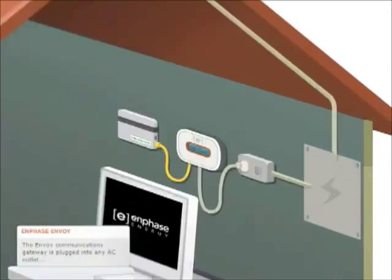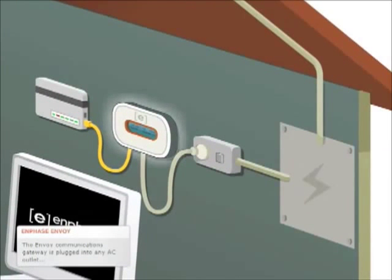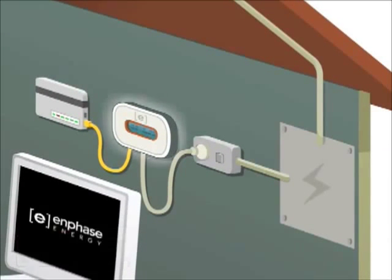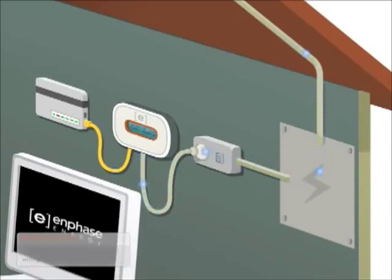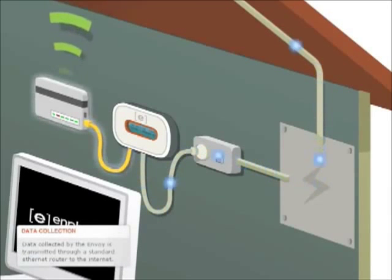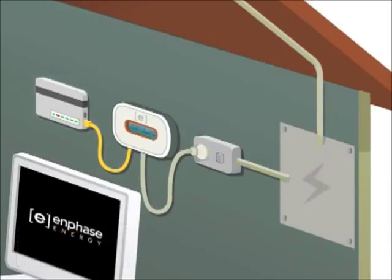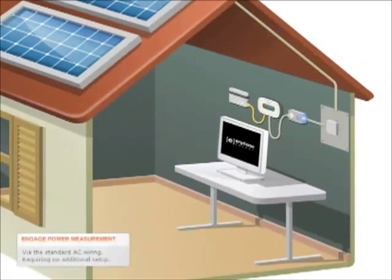The Enphase Envoy Communications Gateway, which is plugged into any AC outlet, collects this info via the AC wiring. Data collected by the Envoy Communications Gateway is then transmitted through a standard Ethernet router to the Internet. This is done through the standard AC wiring, requiring no additional setup.